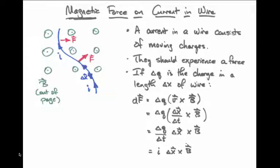And so this force is i times delta x cross b on that piece of the wire, delta x.